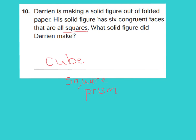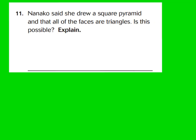For question eleven: Nanako said she drew a square pyramid and that all of the faces are triangles. Is this possible? The answer is no. The reason is because the base is a square, and the definition of a face is any flat surface on a solid figure. So technically it has four triangle faces, but it also has a square base on the bottom, which is a flat surface. Therefore, not all of the faces are triangles — only four of them are; one is a square.